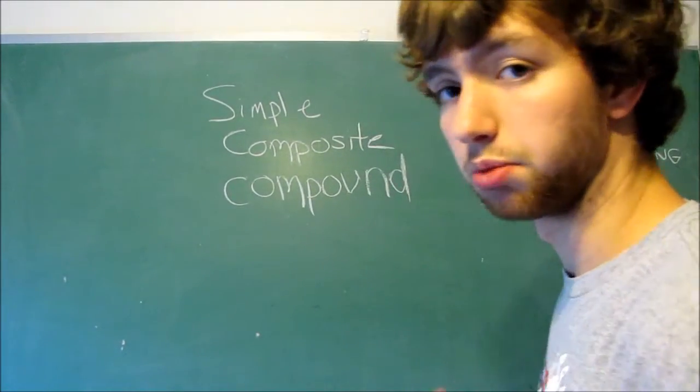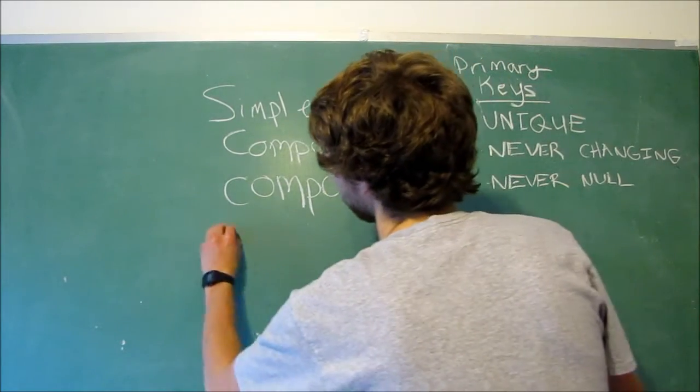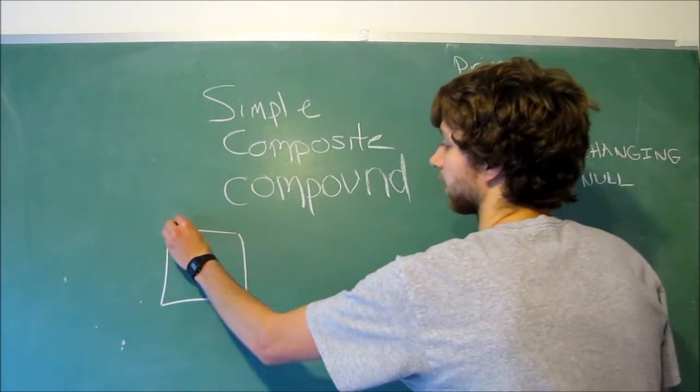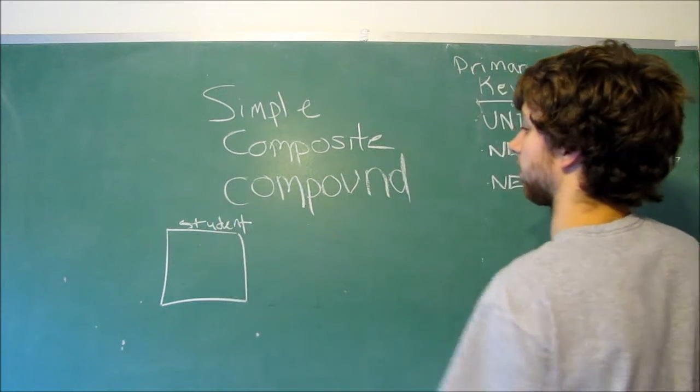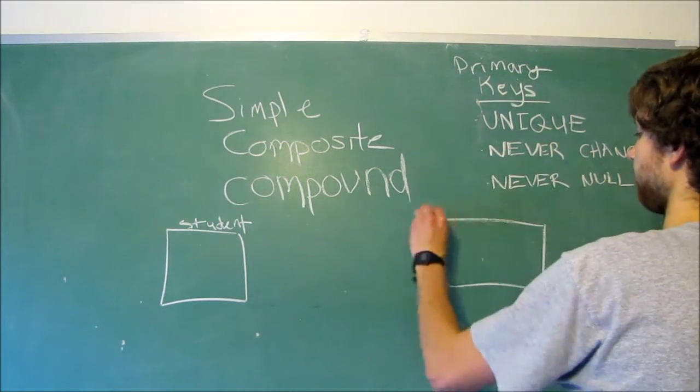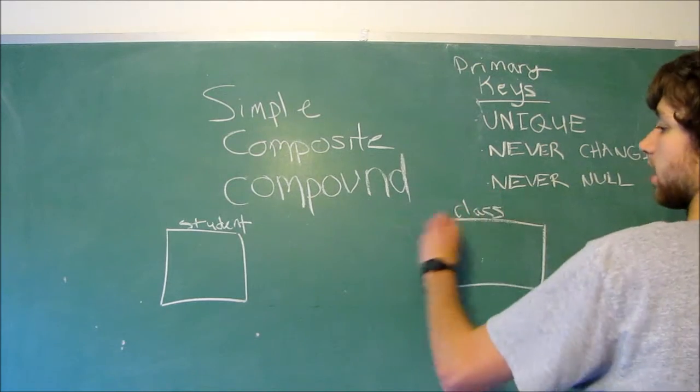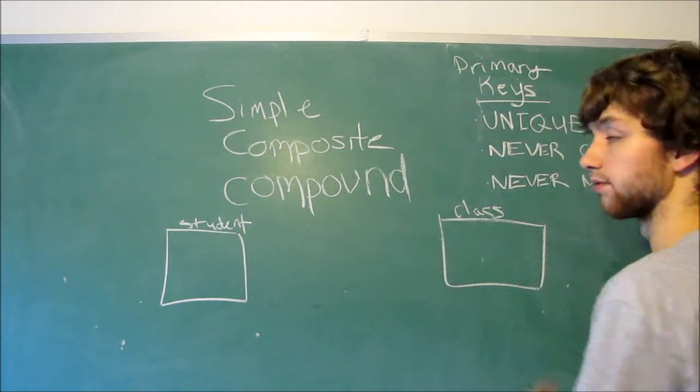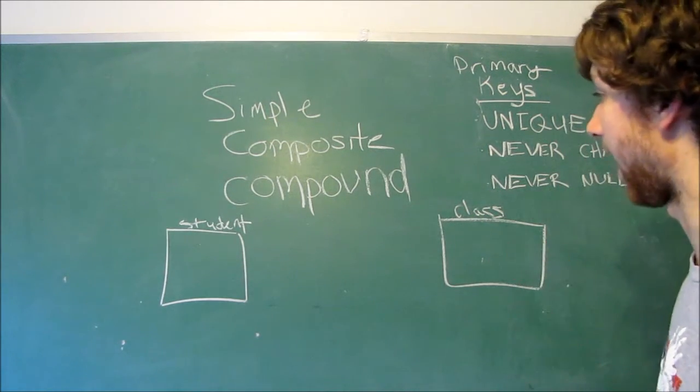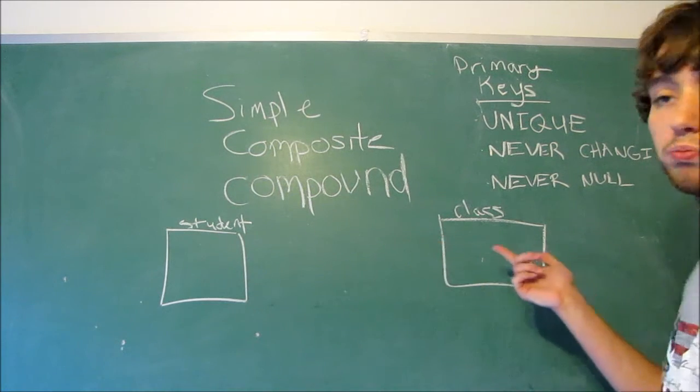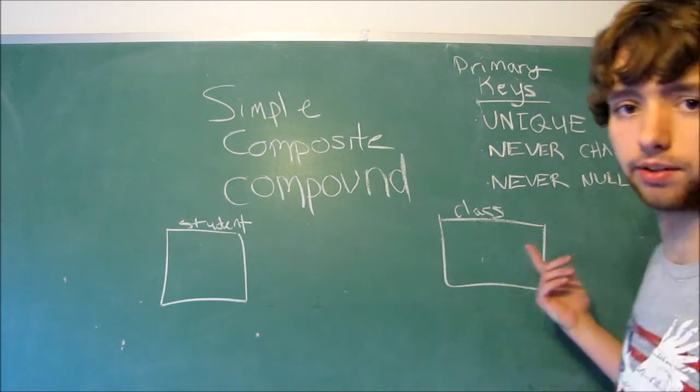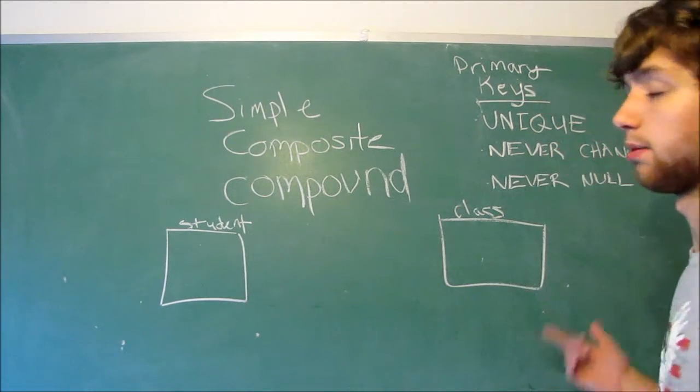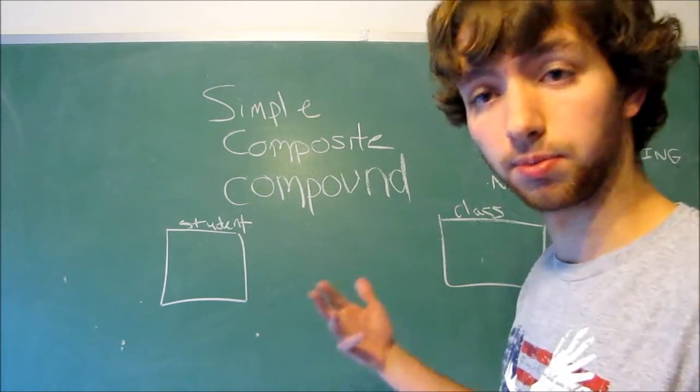So, a good example of this would be for college. We could have a student table. And, we could have a class table, right? So, this table holds information about the student. This information table holds information about the class. Now, how do we show enrollment? Should we make columns for every student here? No, because it's a many to many relationship. That means we need an intermediary table between the two.